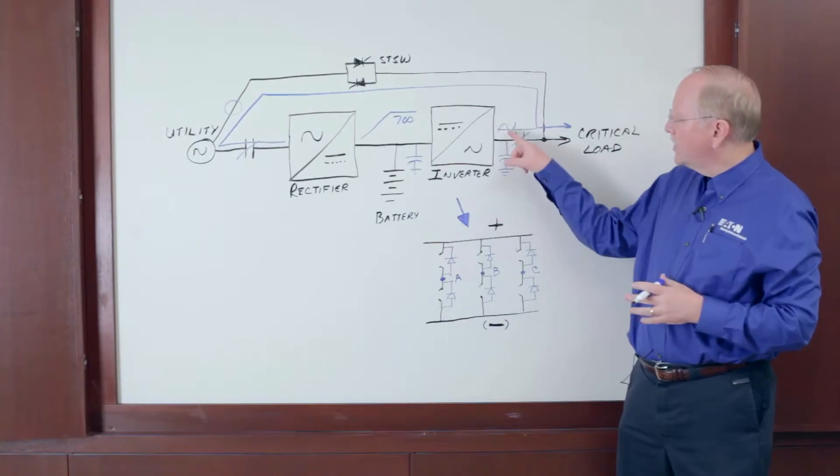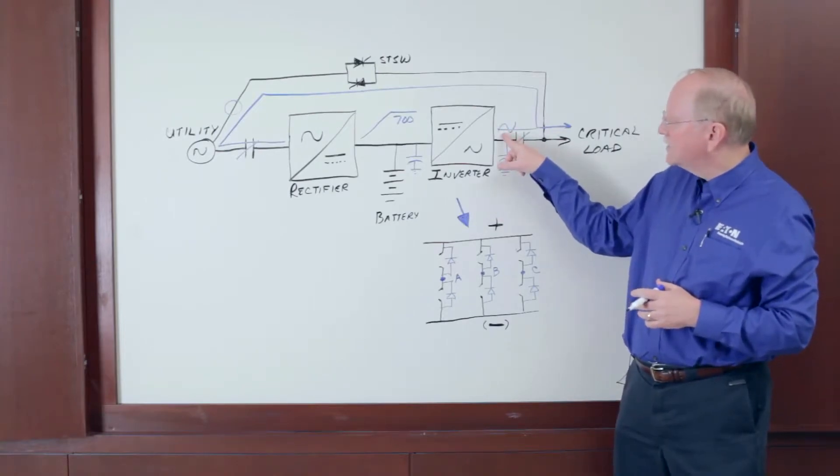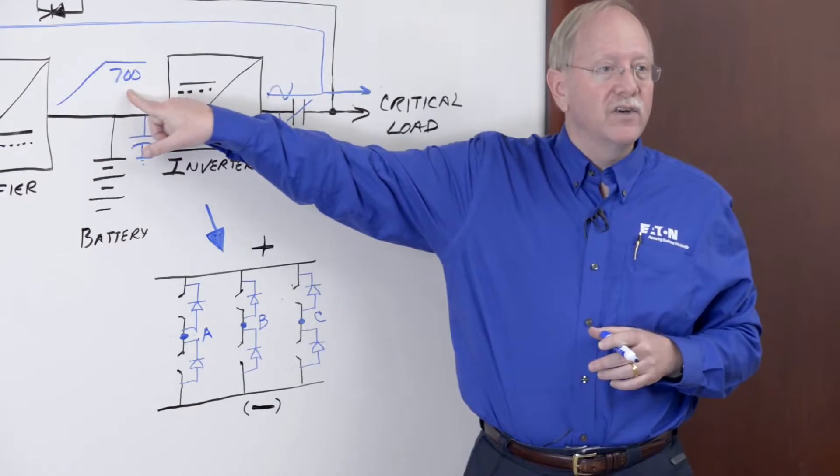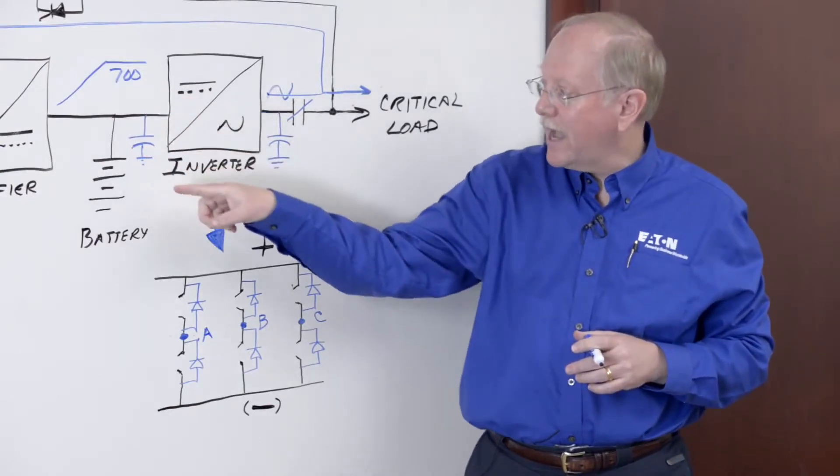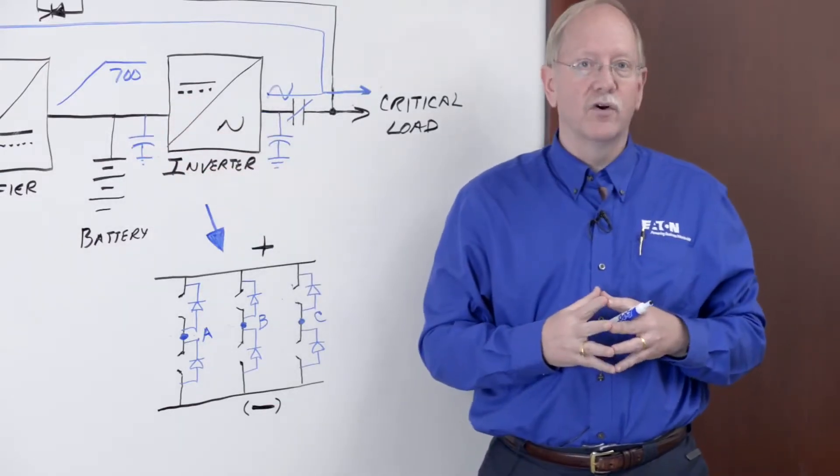This means that the inverter diodes will take the existing AC at this point, rectify it, and create the 700 volts DC that we need to keep the caps charged and to quick start the inverter when necessary.